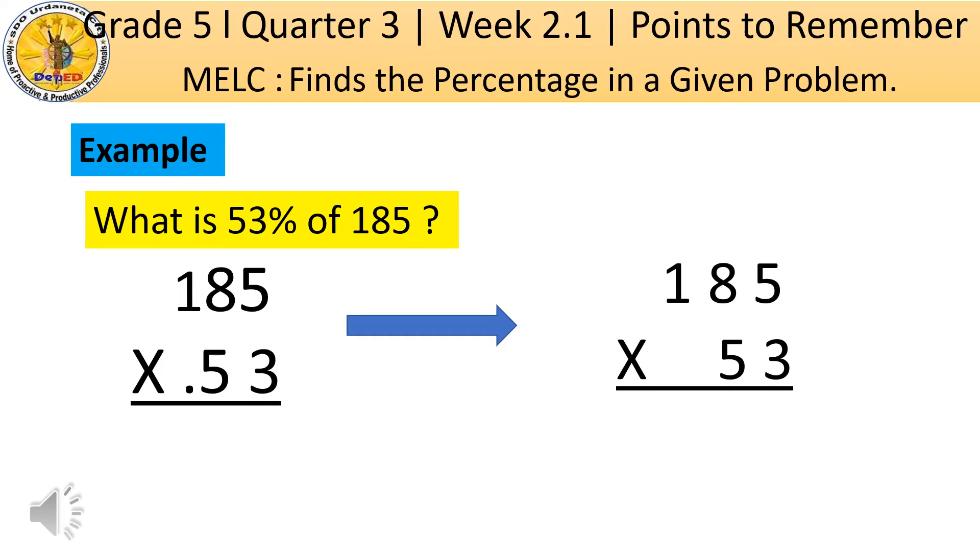Let us multiply the first digit of the multiplier which is 3. So 3 times 5 equals 15. Regroup 1 and put it in the upper second digit of the multiplicand. Then 3 times 8 is 24 plus 1 equals 25. Regroup 2 and put it in the last upper digit of the multiplicand. Then 3 times 1 is 3 plus 2 equals 5.